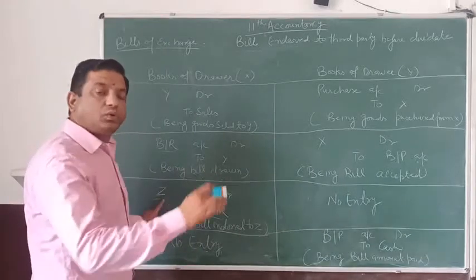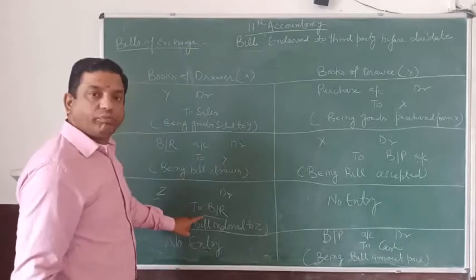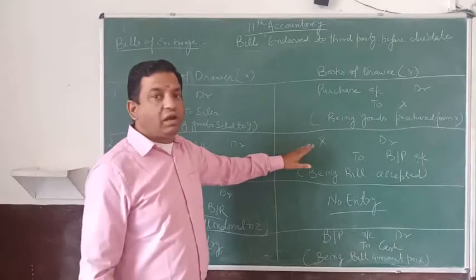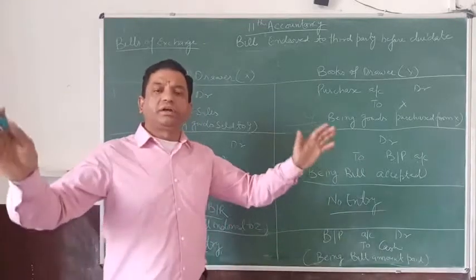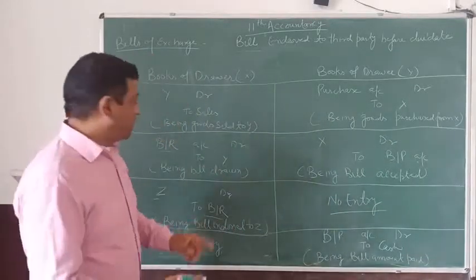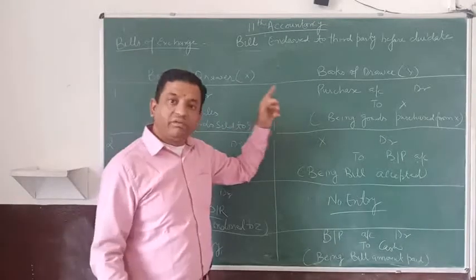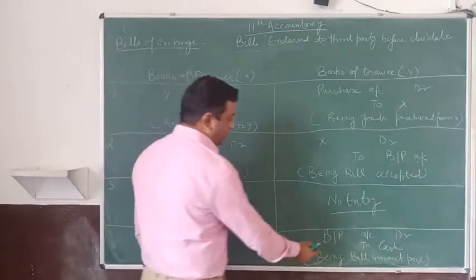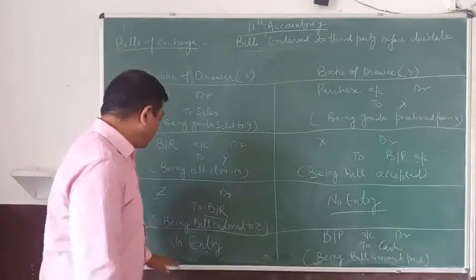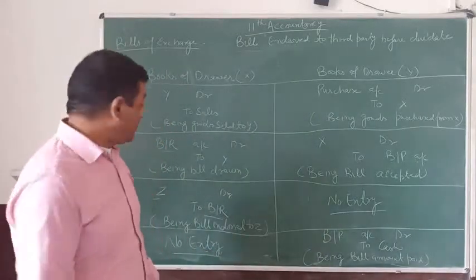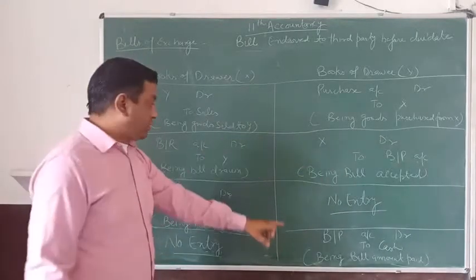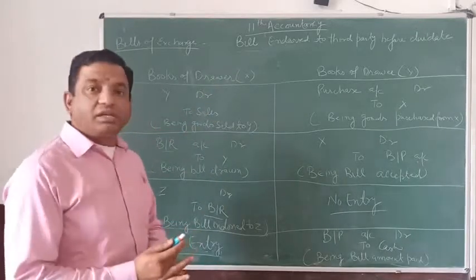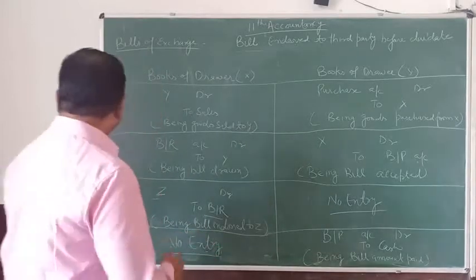Z is the person to whom the drawer is going to endorse the bill — Z Account debit to Bills Receivable. There will be no entry in the books of the drawee before the due date. Once he accepted the bill, he will not make any entry before due date, whatever treatment of this bill is made by the drawer. Then on due date, the third party Z will go to the drawee and present the bill. If the drawee makes the payment to Z, the drawee will make the entry: Bills Payable Account debit to Cash. There will be no entry in the case of the drawer, because he will not receive the payment — it will be received by Z.